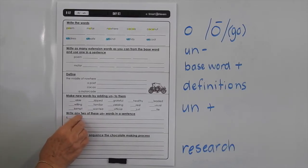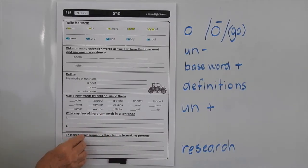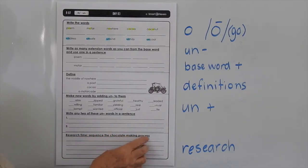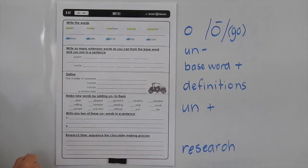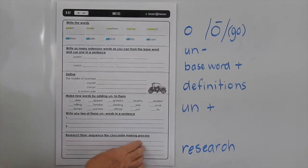Down here you have to write any two of those words that you've made into sentences — two sentences. Then this is research time. You've got to sequence the chocolate-making process. We've only given you four lines to do that, so you're going to have to be quite specific and keep detail to an absolute minimum — enough detail that the reader can understand the process but not too much that you overload the reader.